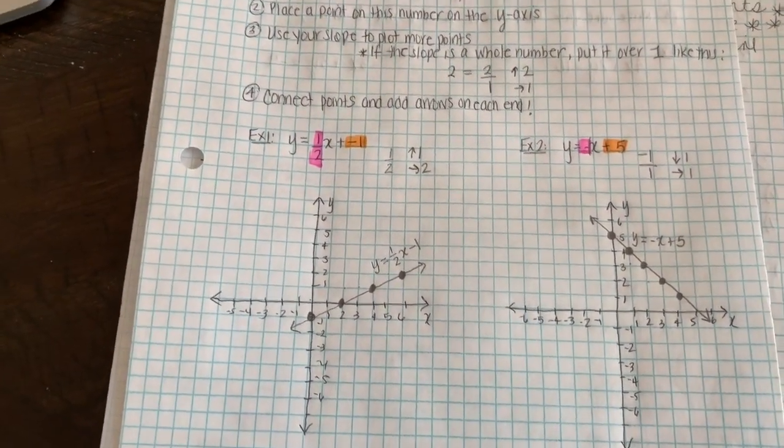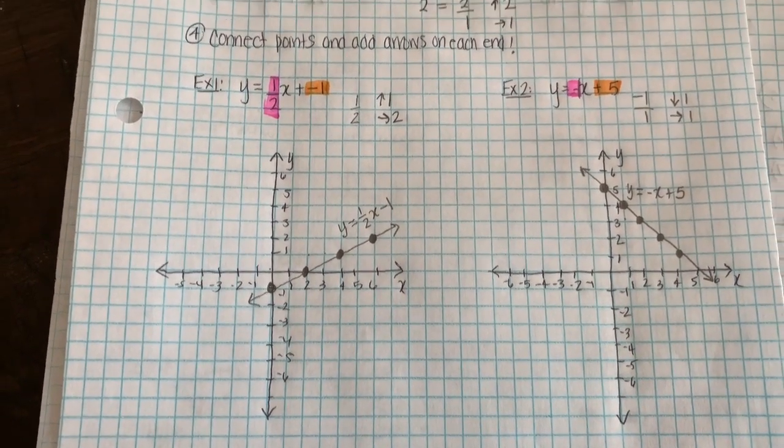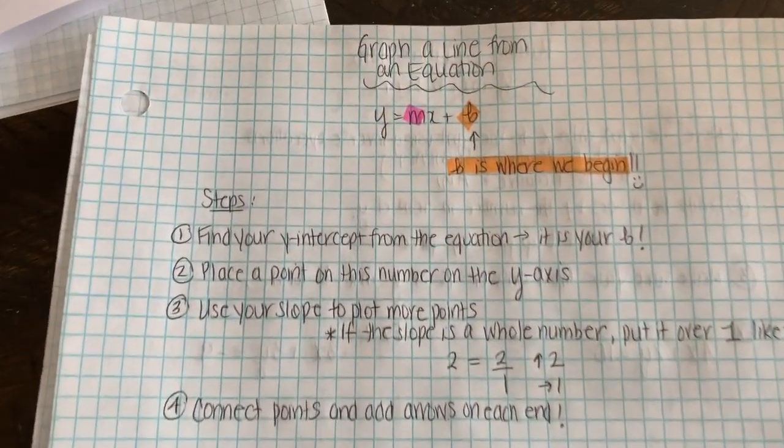Just always remember that b is where we begin. And your slope, as long as you write it as rise over run, this will be nice and easy. Have fun!